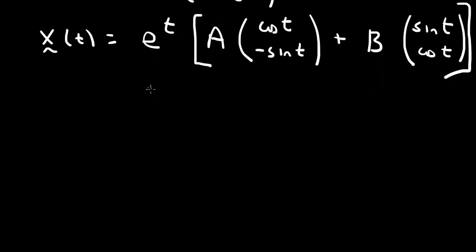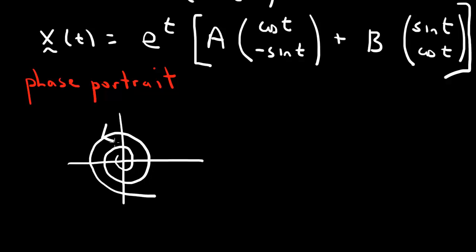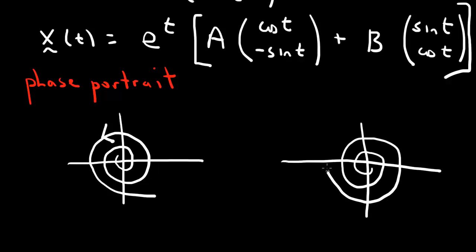Now if we want to draw a phase portrait, it can be one of two types. Since the solution grows with e^t, it spirals away from the origin — either spiraling outward counterclockwise, or spiraling outward clockwise.